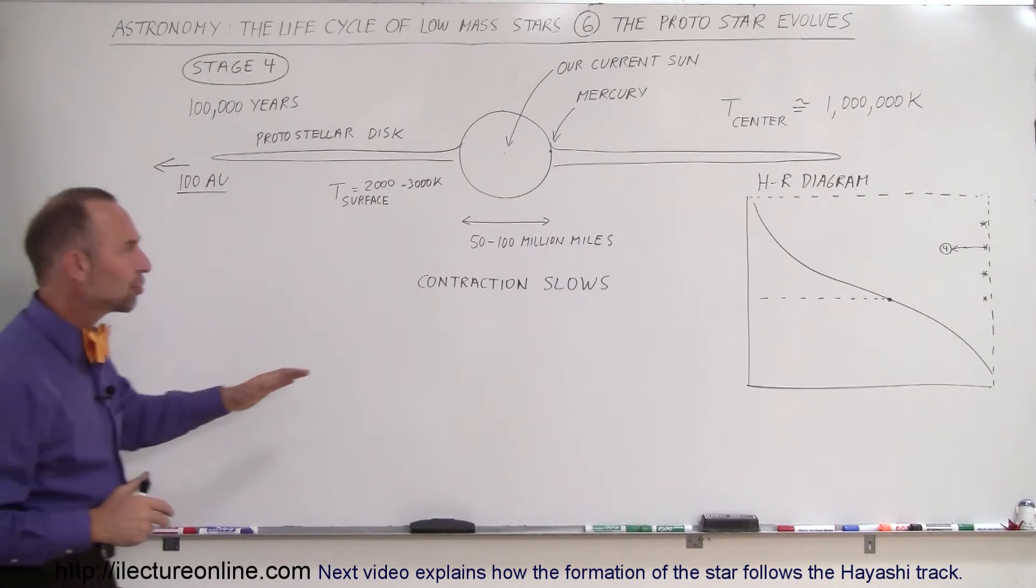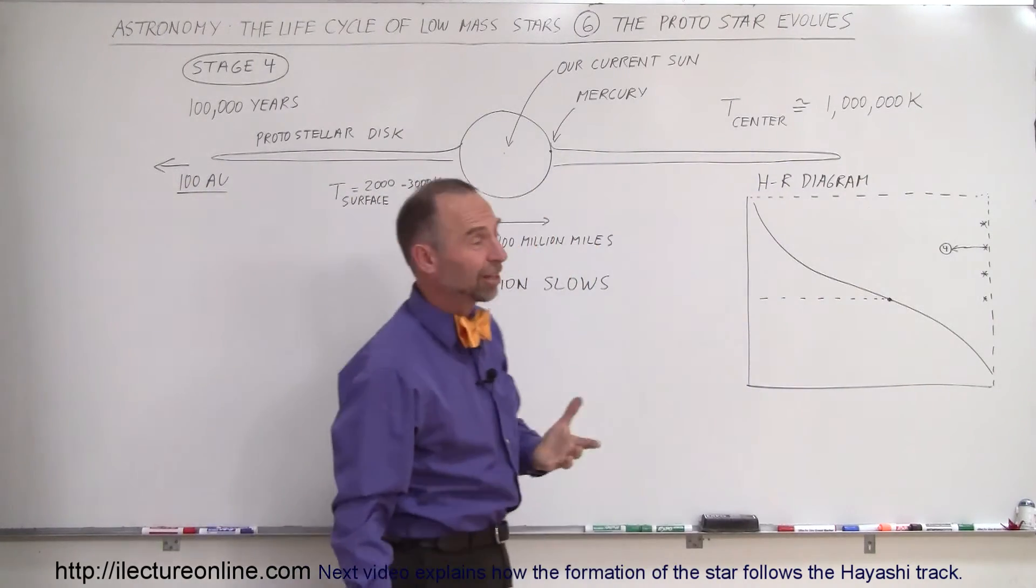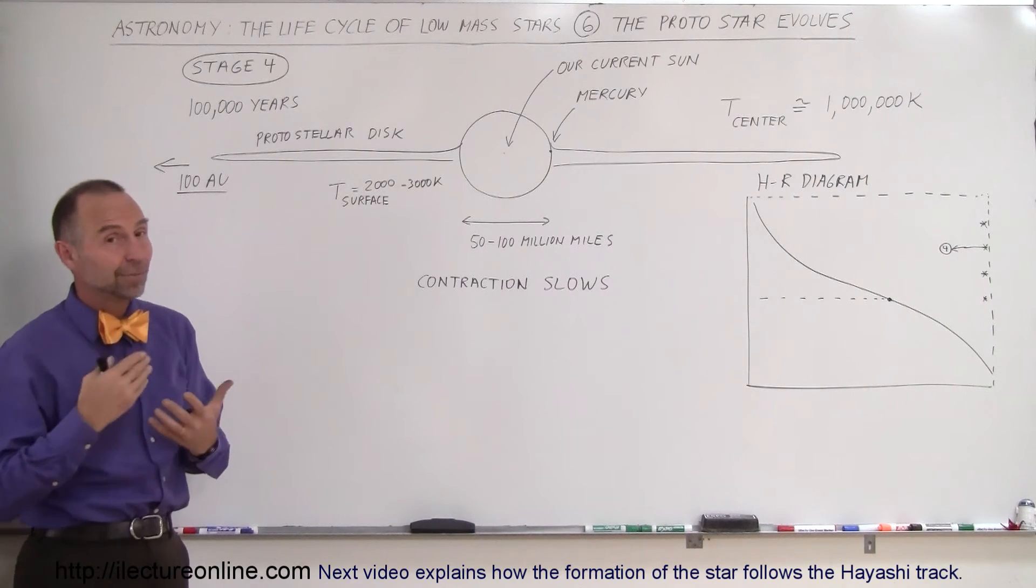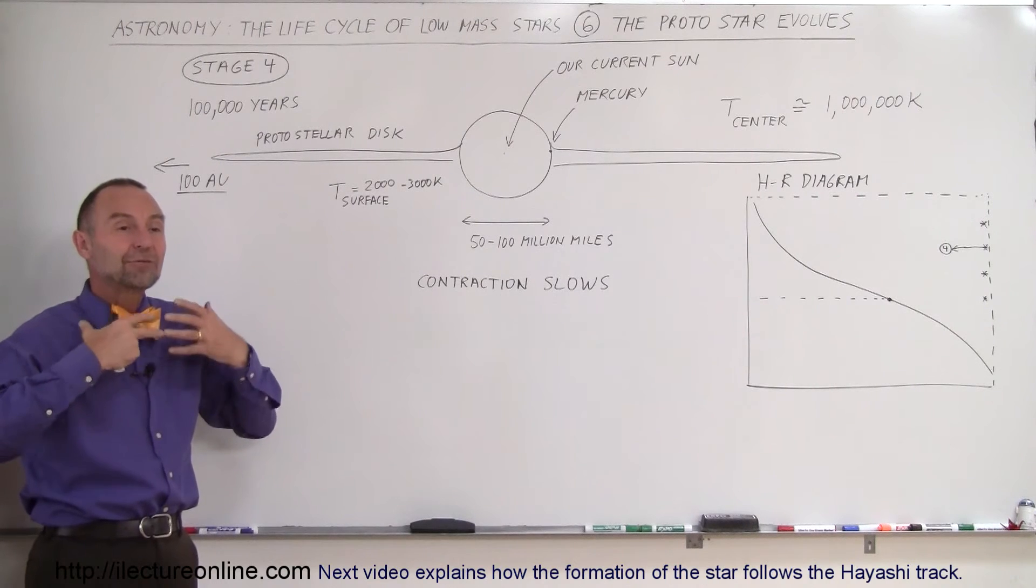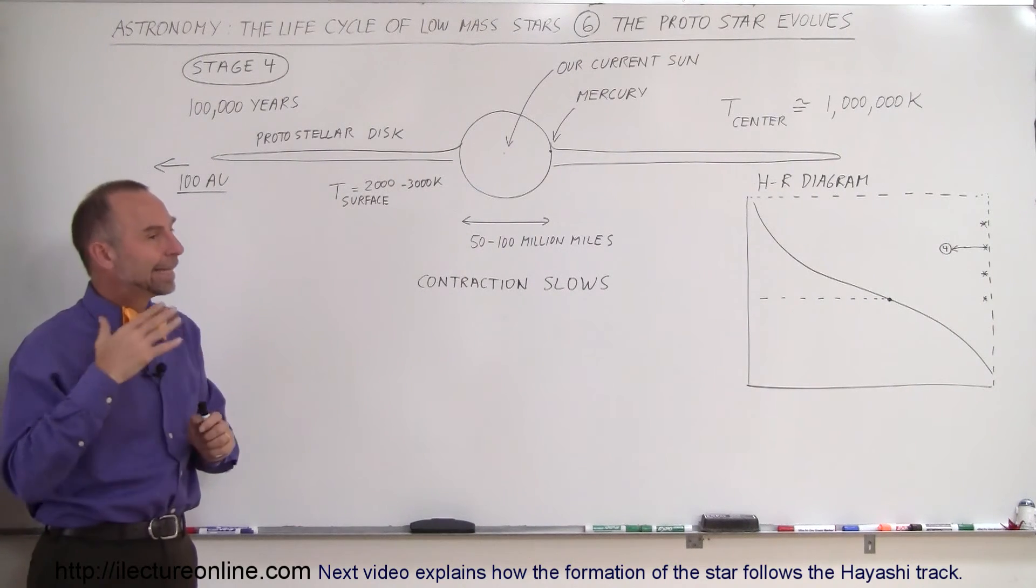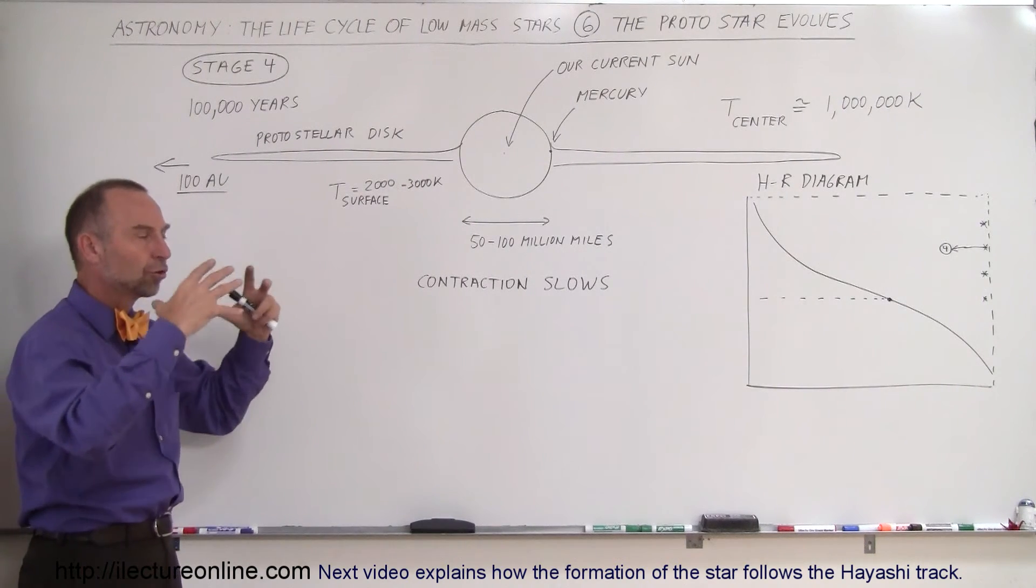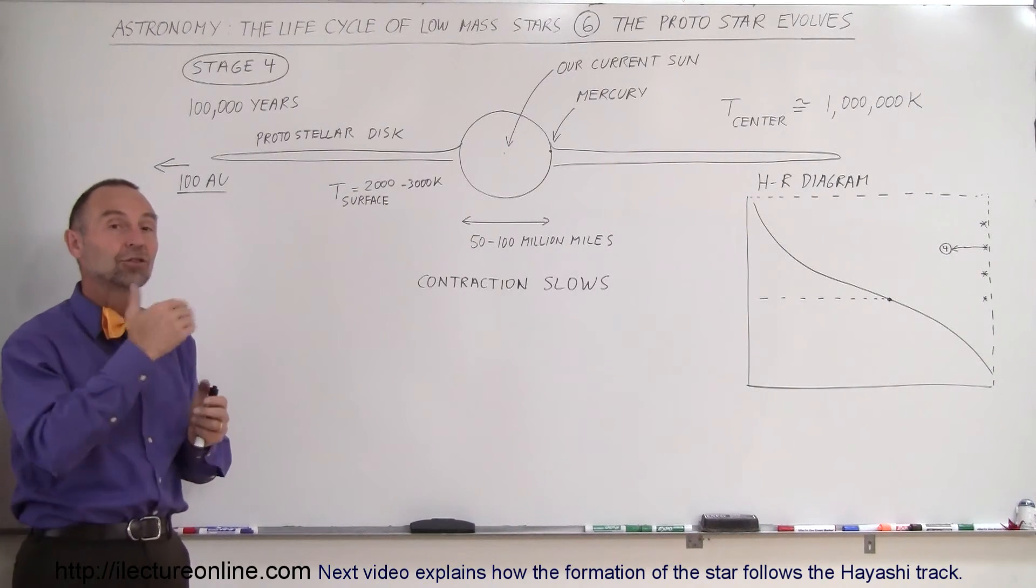Contractions beginning to slow down. Temperatures at the center are now reaching somewhere upwards of about a million degrees Kelvin. Still not nearly hot enough for nuclear fusion to start, but a million Kelvin is very hot, and so the pressures begin to be very large, and the pressures really begin to push back against gravity. Yet, gravity will continue to win over pressure and continue to make the star smaller and smaller, beginning to make the star look more and more like it does today.